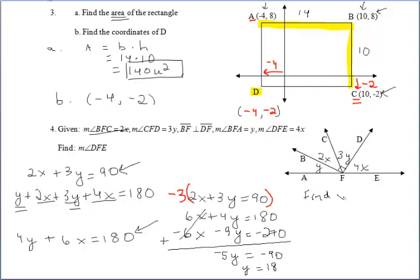Which means that y has a value of 18. Let's go ahead and find x. You can choose which equation you'd like to substitute the y back into. I'm going to take the first equation, which is the 2x plus 3y equals 90, and I'm going to substitute 18 in for y in that equation.